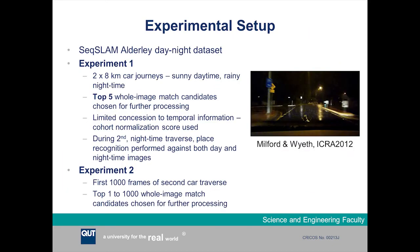We ran two sets of experiments using the Sequence Slam day-night orderly dataset, which is one of the most challenging place recognition datasets available right now. It consists of two 8km car journeys — one during the middle of the day, one during the middle of a thunderstorm at night. For the first experiment, we evaluated place recognition performance on the entire dataset using the top five place match candidates output by stage one of our processing system.